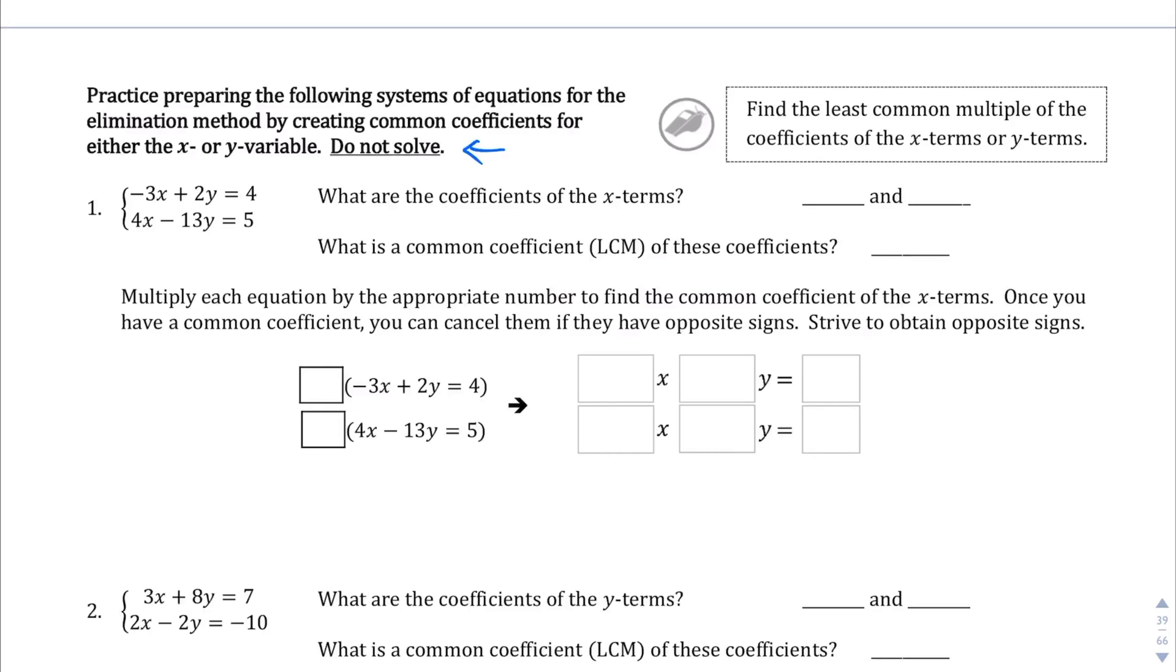We're just getting used to what it means to multiply, so we can actually do the adding or subtracting. So here we have two equations: negative 3x plus 2y equals 4, and 4x minus 13y equals 5. And so the first part here is what are the coefficients of the x terms? Those are the x terms. The coefficients are negative 3 and 4. The coefficients are the numbers in front of the variables.